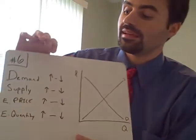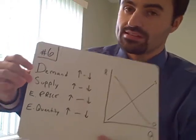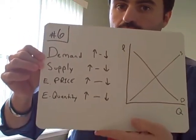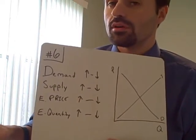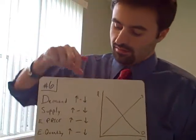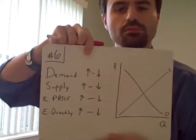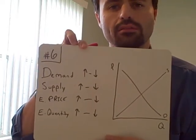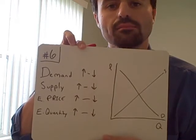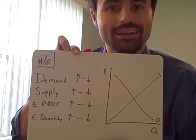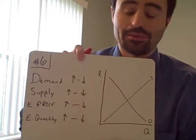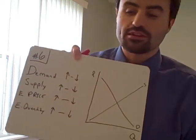So the first thing we need to decide is: is it going to be a demand issue or a supply issue? And once we decide that, then we need to decide if it's more or less. Another big tip, these arrows, please don't view those as up and down. View those as more or less.